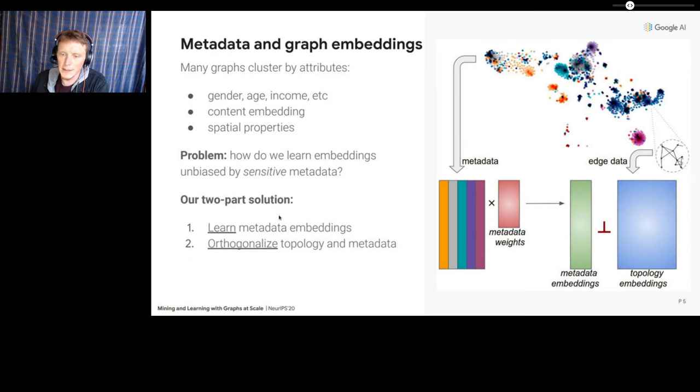Our work in this space constitutes a third diverse approach, which has two parts. First, we learn an embedding of the metadata itself, which essentially encodes precisely how the graph clusters by the metadata. Then we debias the graph embeddings by projecting them to be orthogonal to those metadata embeddings. Next, I'll dive into the details of those steps and then show how they work on some debiasing tasks.